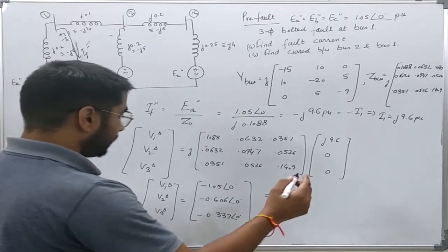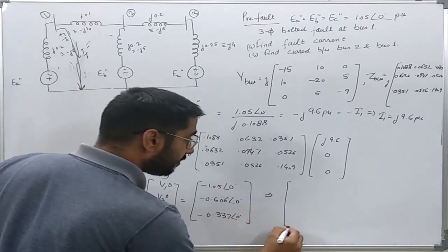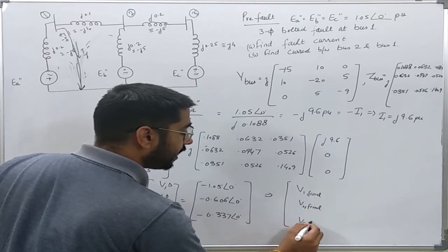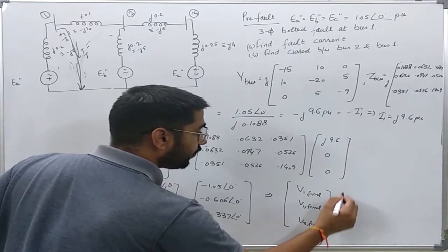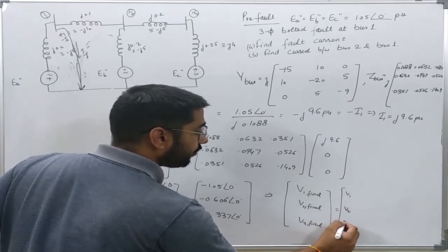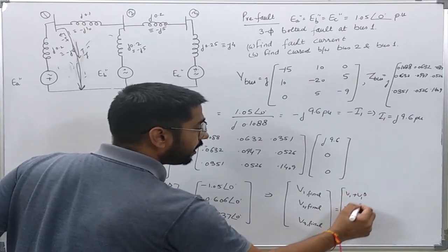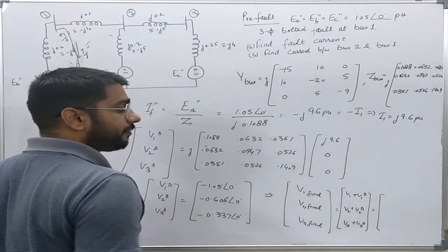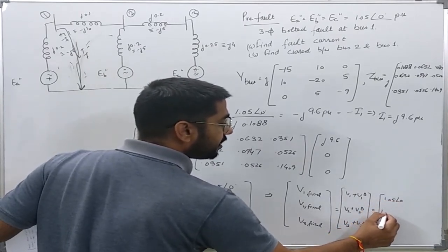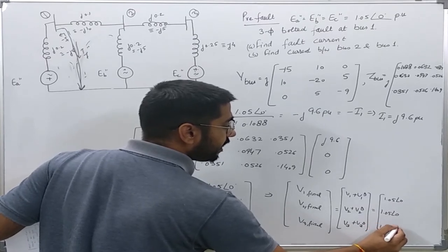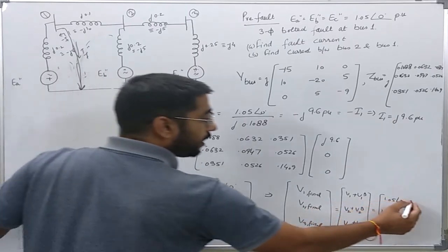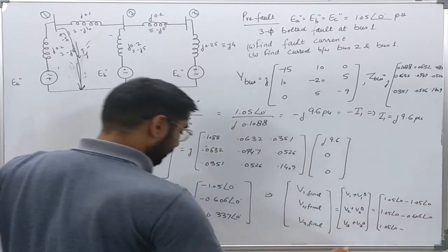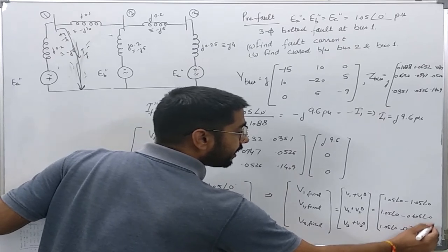It implies that I can find the final values V1_final, V2_final, V3_final equals V1_pre-fault, V2_pre-fault, V3_pre-fault plus V1_delta plus V2_delta plus V3_delta. The pre-fault voltages were just 1.05∠0° for all three buses, and the delta values are already known now: minus 1.05∠0°, minus 0.606∠0°, and minus 0.337∠0°.